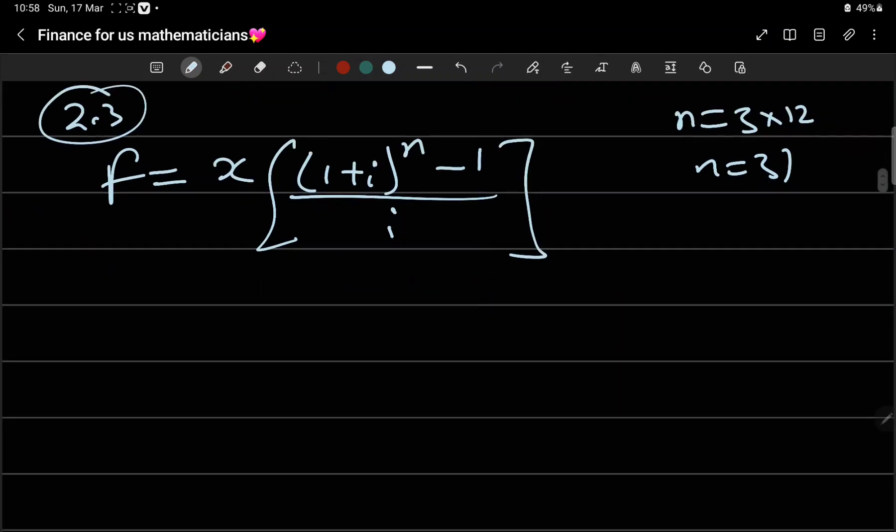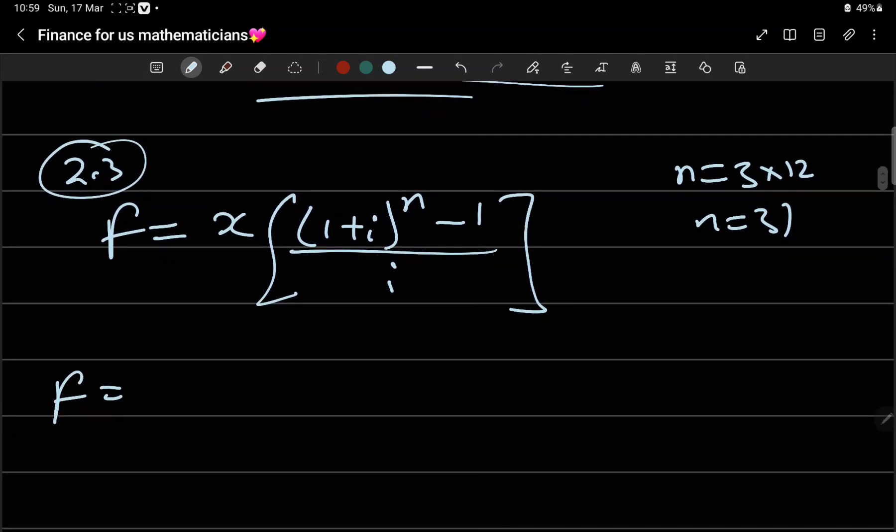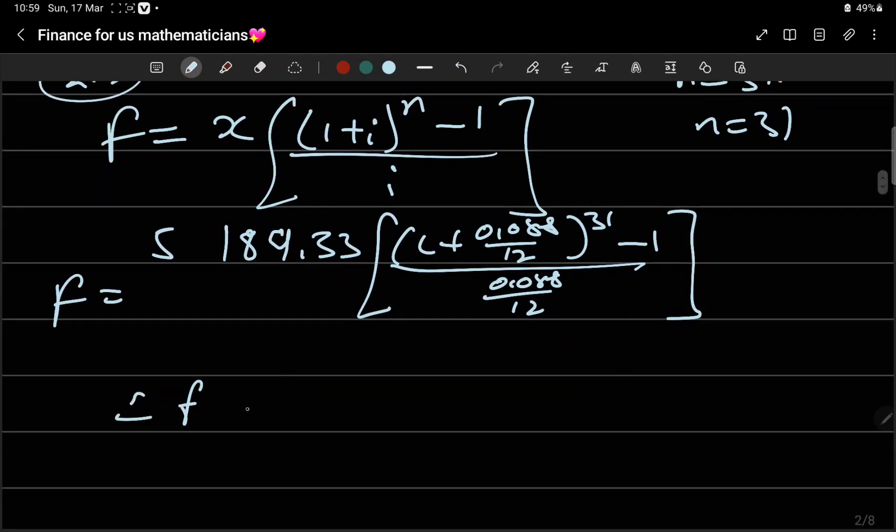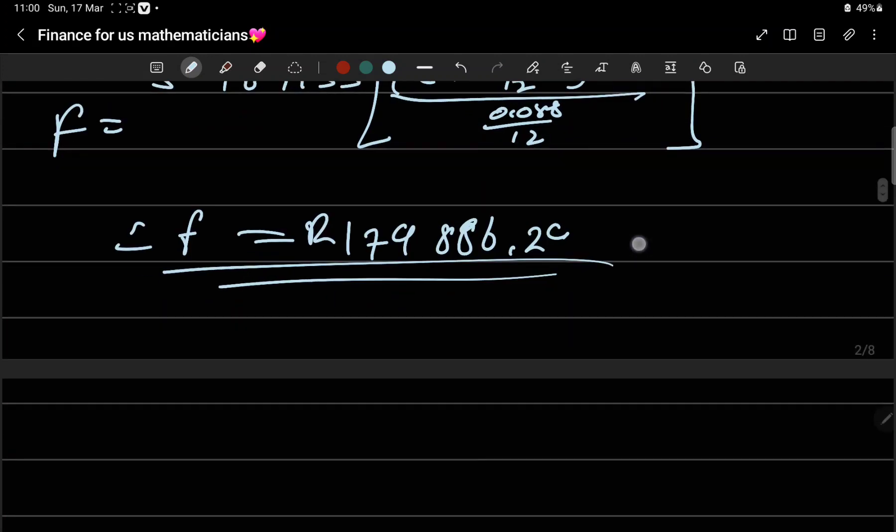f is what we want. x we calculated as 2,189.33 cents. Then (1 plus 0.088/12)^31 minus 1, over 0.088/12. Therefore f equals, calculator, you get f equals 179,886.29, just checking it.